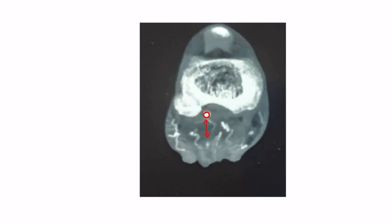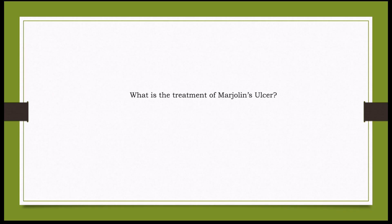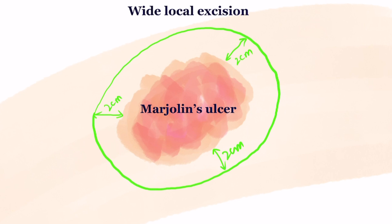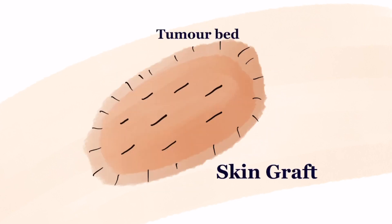It is important to assess on MRI the involvement of major vessels and nerves and distance from bone, so that the line of excision may be planned. Surgery remains the mainstay of treatment for Marjolin's ulcer. Wide surgical excision with margins of around 2 centimeters is preferred. Defects following resection should be skin grafted, except where the bed may not be suitable for a skin graft, in which case a flap may be used.